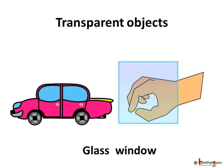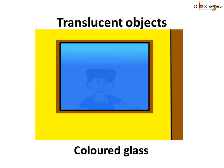Those substances or materials through which we can see are called transparent materials. Clear glass, clear water, air and some plastics are examples of transparent materials. We cannot see clearly through a deeply colored glass, waxed paper, dirty water and some plastic. That's why they are called translucent materials.